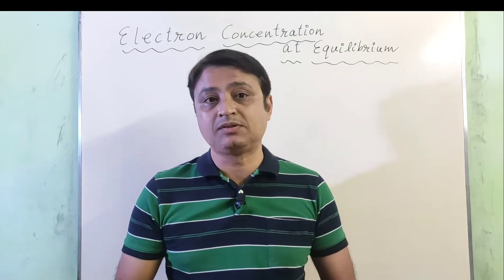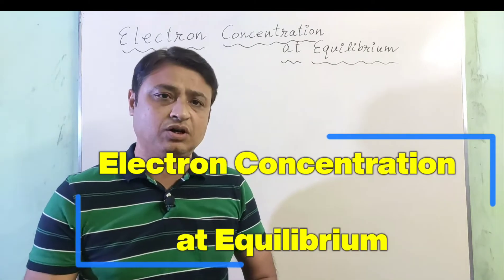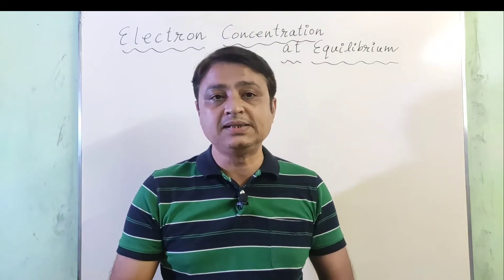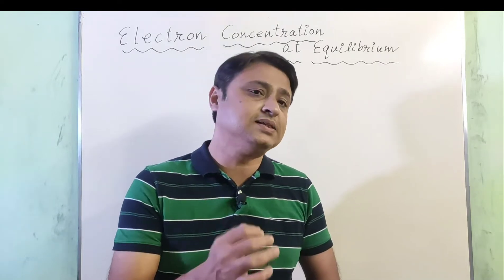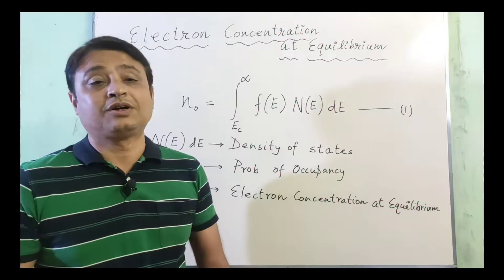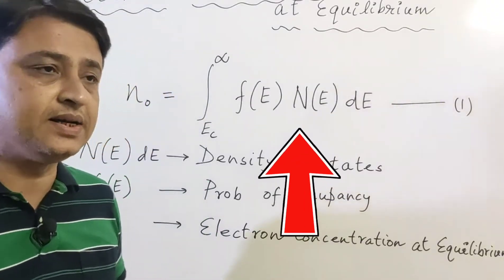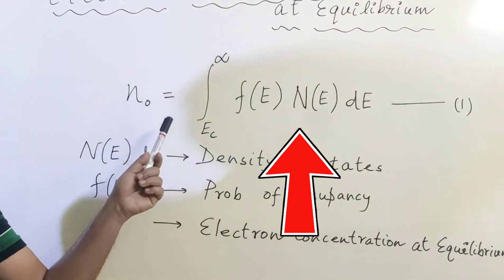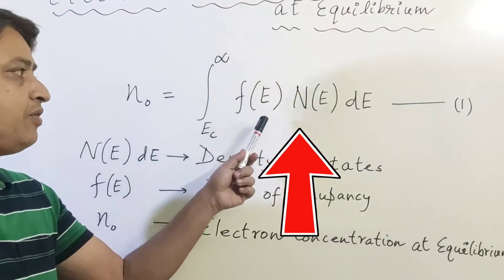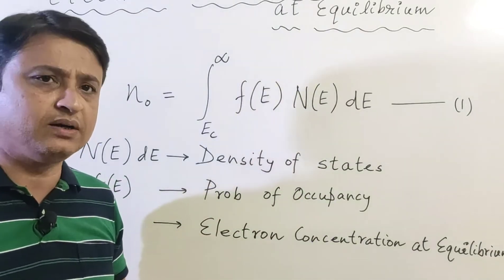Using the Fermi-Dirac distribution function, we can calculate the concentration of electrons in a semiconductor if the density of available states inside the conduction band is known. The concentration of electrons in the conduction band can be written as N₀ equals integral from Ec to infinity of f(E) N(E) dE, equation 1.